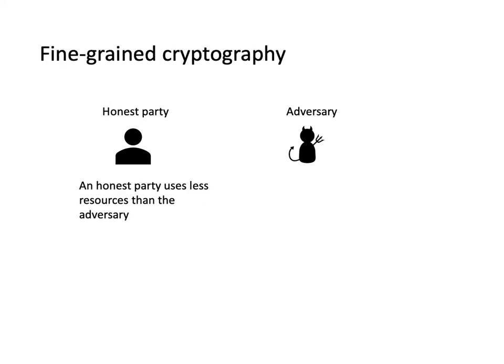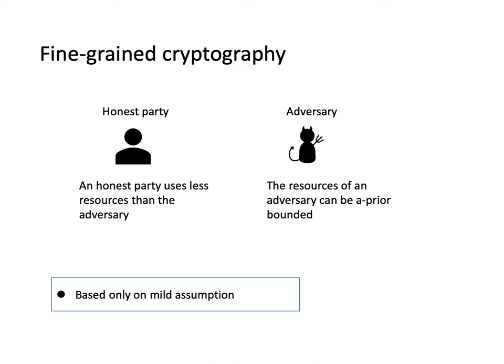Fine-grained cryptography gives us a direction in approaching this problem. Instead of considering polynomial time honest parties and adversaries, we only require that an honest party uses less resources than adversaries. And the resources of an adversary such as the running time, the memory, and the circuit depth can be prior-bounded. Under this setting, it's possible to make the underlying assumption extremely mild and make the scheme very efficient.